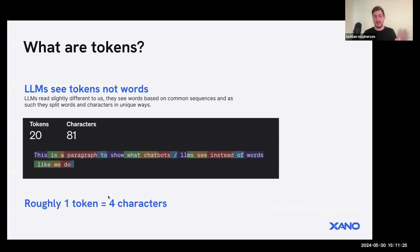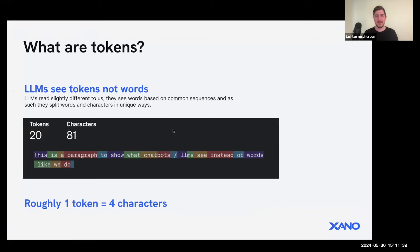If you're looking to do some math on translating tokens into cost, a really good rule to follow is one token is roughly four characters, similar to a word. You can use that math to work out the cost of your APIs.